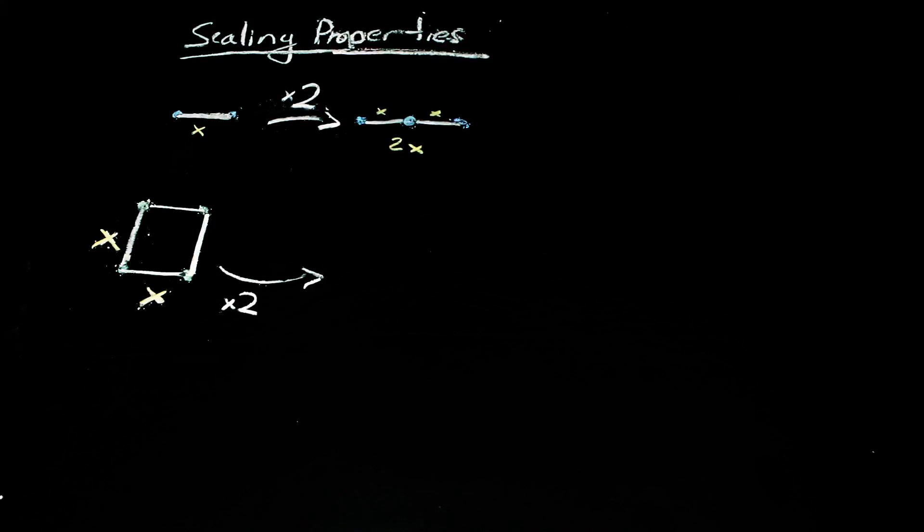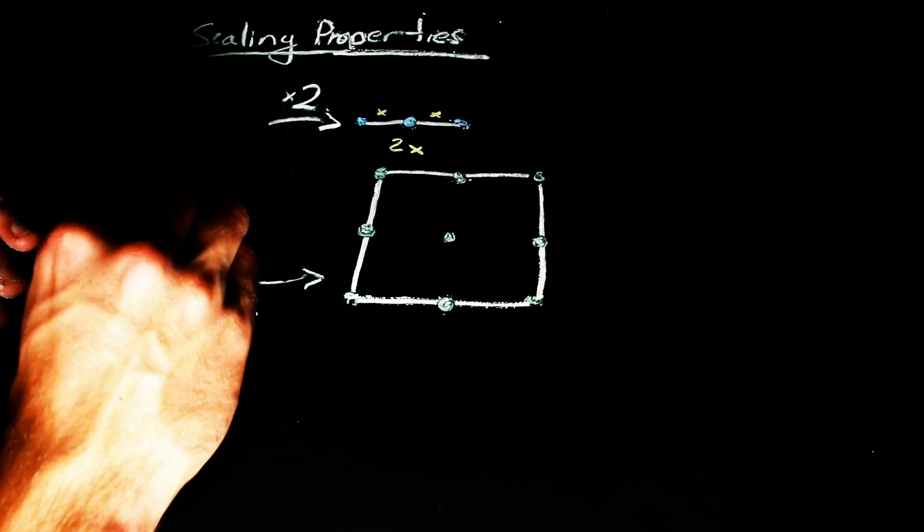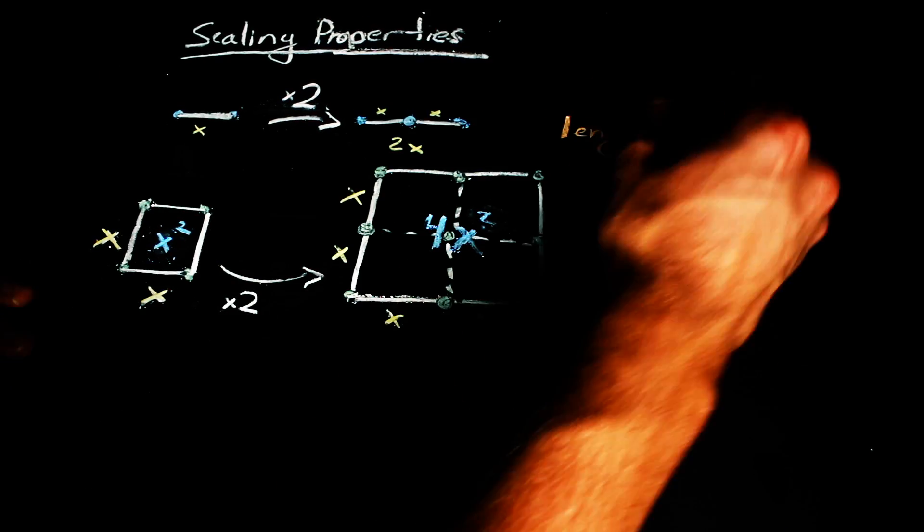If you take a square and scale it up by two, you get four copies of the original square inside the larger square.